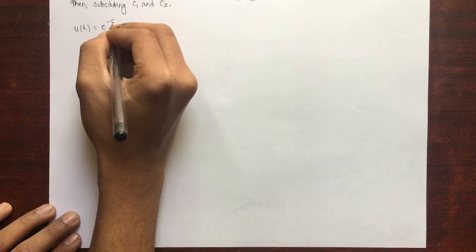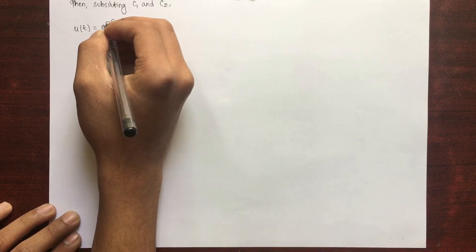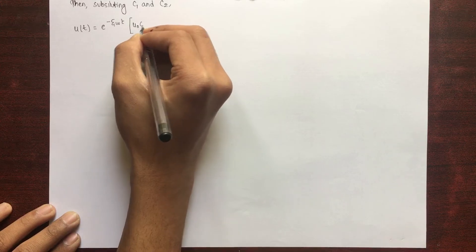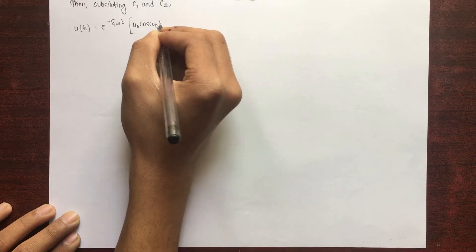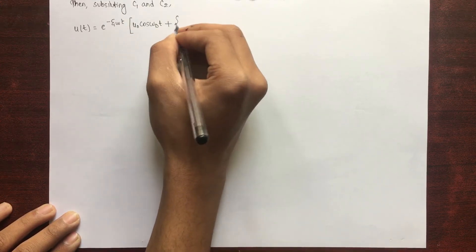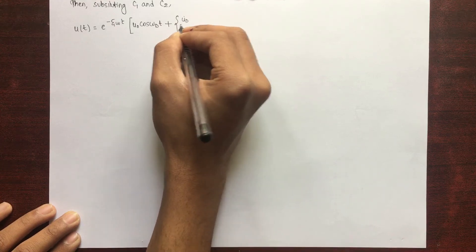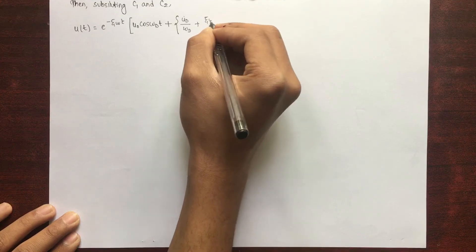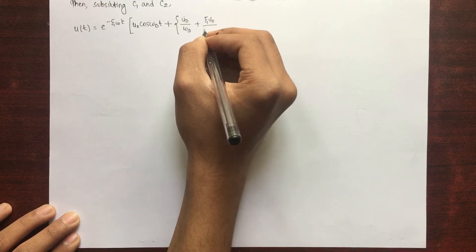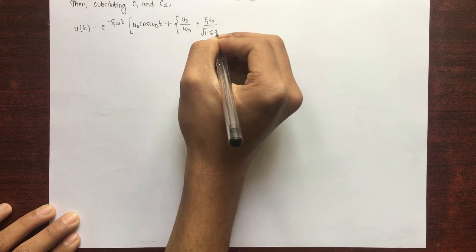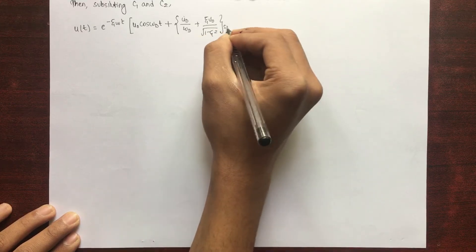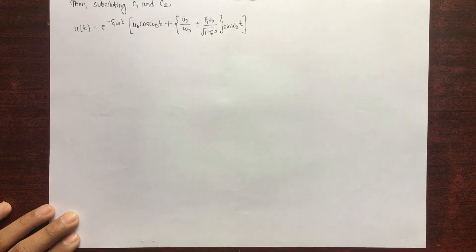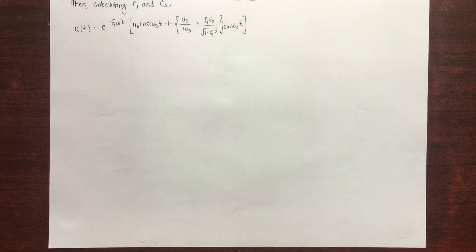Substituting C₁ and C₂, the general solution is: u(t) = e^(−ξωt) · [u(0)·cos(ω_d·t) + ((u̇(0) / ω_d) + (ξ·u(0) / √(1 − ξ²)))·sin(ω_d·t)]. This is the general solution form for underdamped vibration.